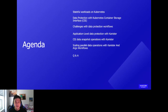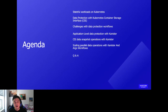There are two parts to this demo. During the first part, we'll show how you can use Canister to implement data protection workflows to interact with the CSI snapshot APIs. During the second part, we'll show how you can scale out these data operations to run in parallel using Canister and Argo Workflows. Towards the end, we'll make sure there's time for Q&A.